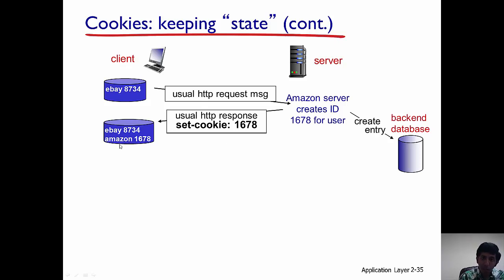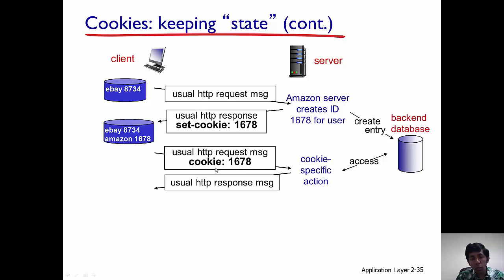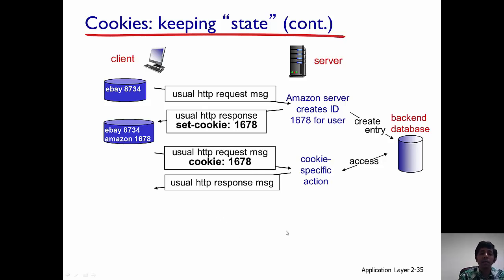When this HTTP response message is received by the client, it creates an entry in its local computer. Now, when this client later accesses amazon.com again, it sends the request message but this time it includes the cookie. As soon as that cookie information reaches the server, the server accesses the database, pulls the information related to this particular client, and sends the response message back.